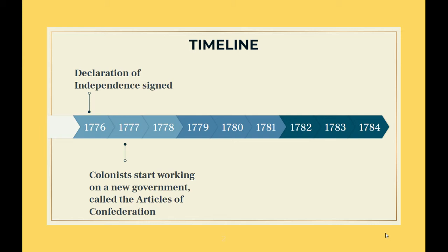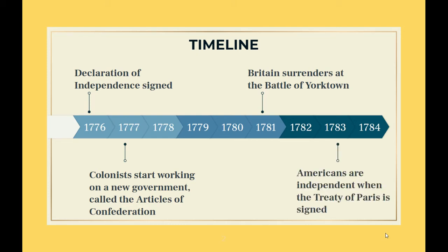Then we fight the war for years and years, fighting for that independence that we want, until we finally win at the Battle of Yorktown, when Britain surrenders in 1781. Two years later, both sides sign the Treaty of Paris, and Americans are finally independent. When the Treaty of Paris is signed and we are independent, it means we are no longer colonists. Now we are part of our own country. We are Americans.